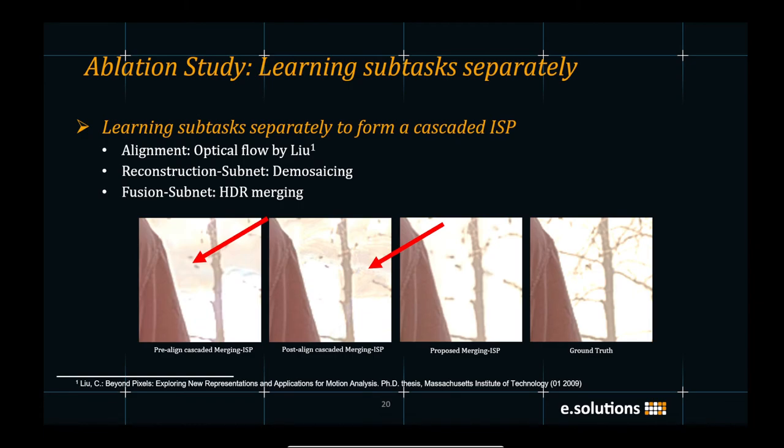In order to test our subnets, we perform an ablation study where we learn the subtasks separately. So in this slide, we show the results of learning the subtasks separately for demosaicing and HDR merging that forms a cascaded ISP. In order to merge the multiple exposures, we use the optical flow by Liu. As it can be seen that the pre-aligned cascaded approach which uses the optical flow alignment on the raw data is affected by the missing pixel values and results in ghosting artifacts. Also, the post-aligned cascaded approach is degraded by the demosaicing errors affecting the optical flow alignment. The proposed end-to-end learning of the merging ISP does not contain any such artifacts.